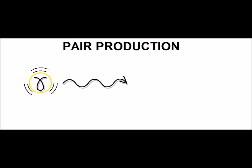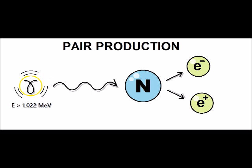When a gamma ray photon traveling with energy greater than 1.022 mega electron volts strikes a nucleus, it can be annihilated, thereby forming an electron and positron pair.